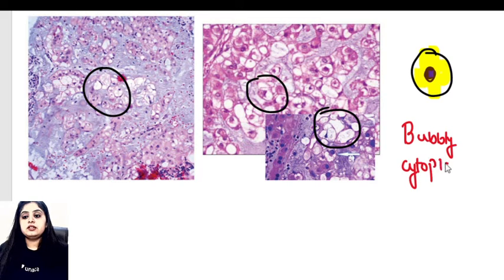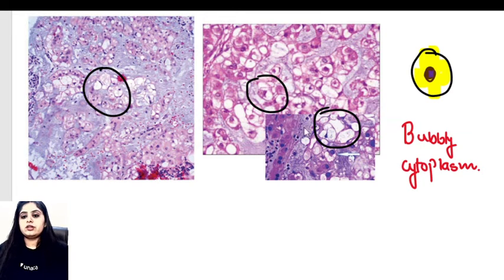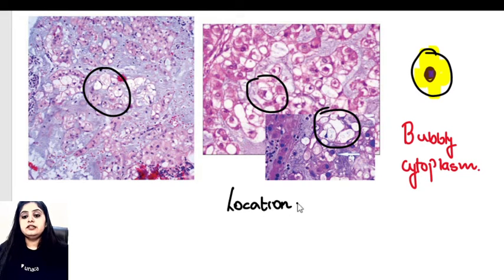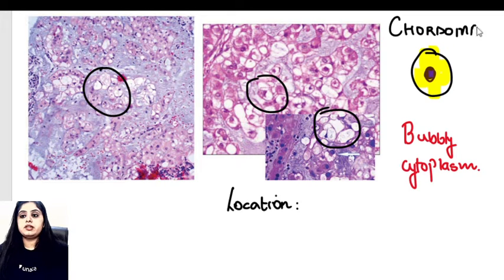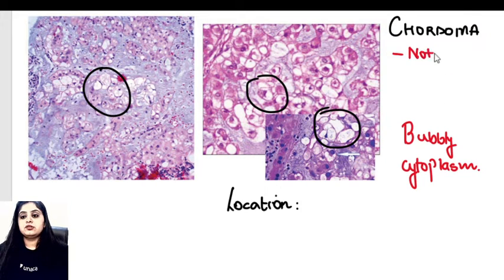These cells are given a name. By looking at them, you might first ask what is the location of this tumor. So let me tell you — this tumor is known as chordoma. As the word suggests, the origin of the tumor becomes very evident: it arises from the notochord remnants.